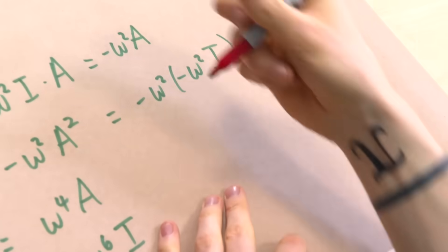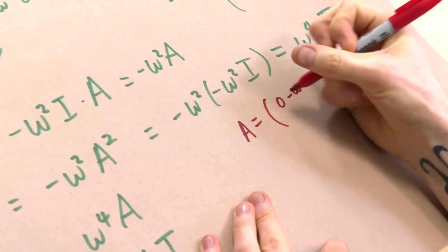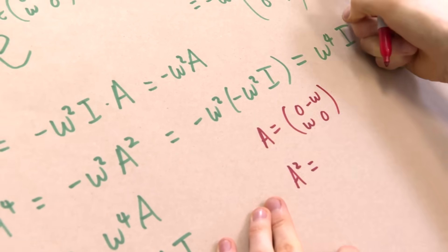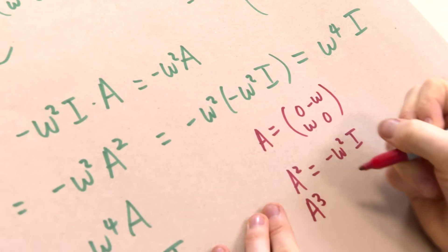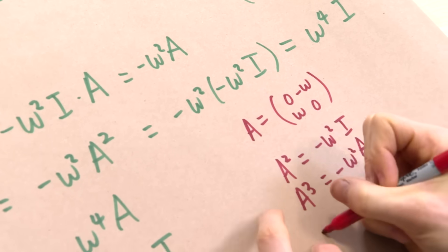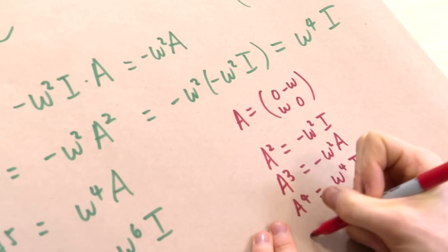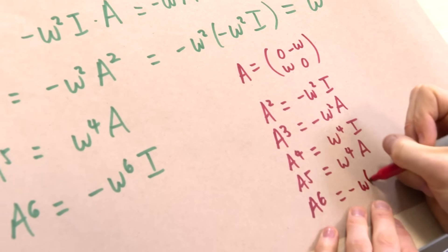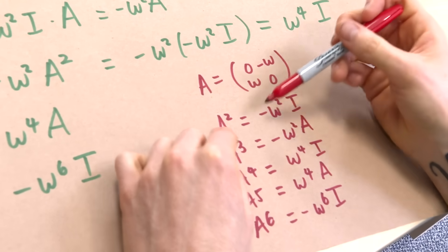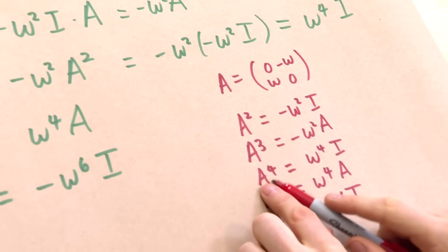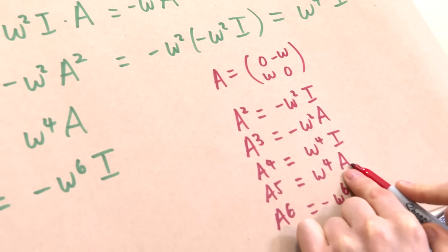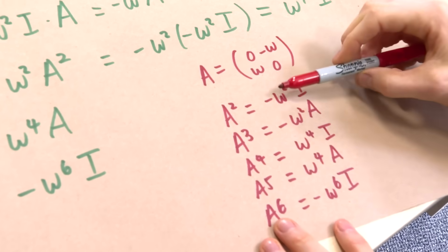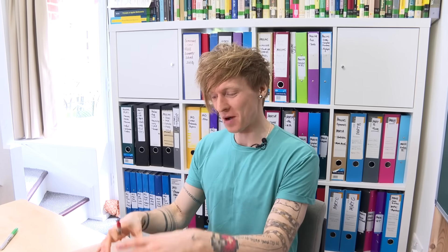Taking stock of what we've got: A is [[0, -ω], [ω, 0]]; A squared is minus ω² I; A cubed is minus ω² A; A to the four is ω⁴ I; A to the five is ω⁴ A; A to the six is minus ω⁶ I. So A squared has ω squared, A cubed also has ω squared but with an A as well, A to the four has ω to the four, A to the five has ω to the four with an A, and A to the six has ω to the six. The signs go minus minus plus plus minus minus — there is a pattern, not super obvious yet, but it becomes clearer when we plug into the full formula.